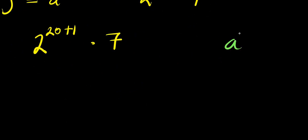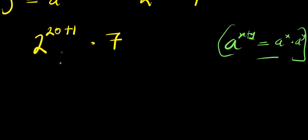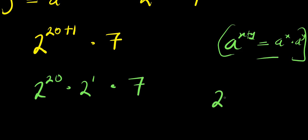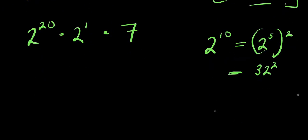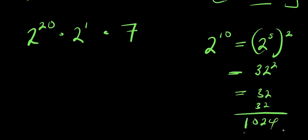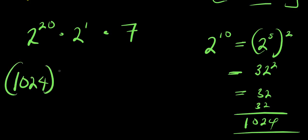Now if you have a^(x+y), this equals a^x times a^y. So I have 2^(20+1) times 7, which gives 2^20 times 2^1 times 7. Now 2^10 is 1024, so 2^20 is (2^10)^2, which is 1024 squared.